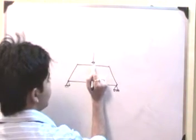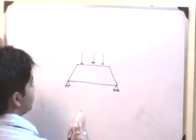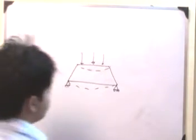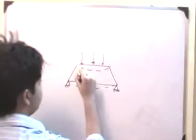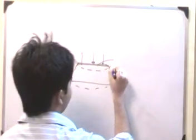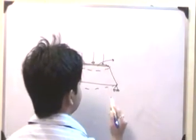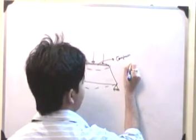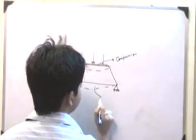So if I apply some kind of a vertical load, essentially the structure will bend like this. From the concept of beam, this top chord member will essentially be under compression and this bottom chord member will be essentially under tension.